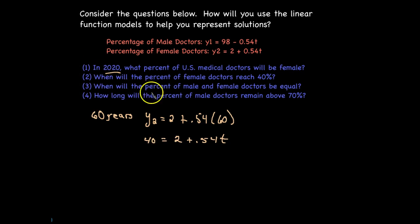Let's look at the third one. When will the percent of male and female doctors be equal? Pause the video for a second and think about how you could represent that symbolically. Y1 represents the percent of male and Y2 represents the percent of female. If we want them to be equal, we can take the equation for Y1, which is 98 minus 0.54T, and set that equal to the equation for Y2, which is 2 plus 0.54T. We made these equal, and then we would just want to solve for T.